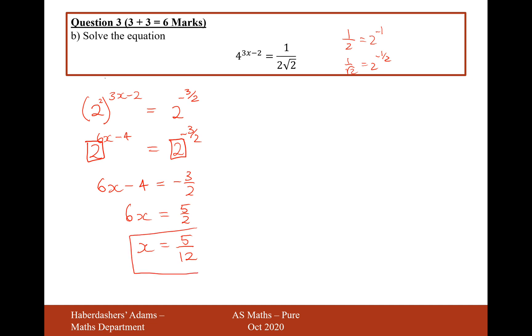There we are, that's the answer for x, and that's the answer for question 3 in total, worth 6 marks in total, 3 for each question. The key to this question here was to make the same base on your equation.